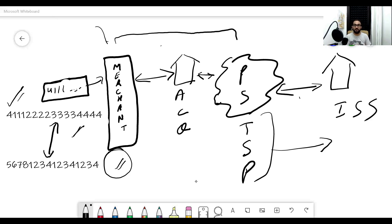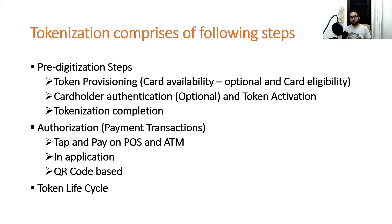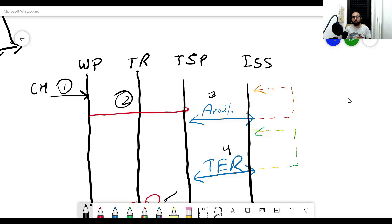By now I hope you understand tokenization at a high level. Let's go a little deeper. Broadly the tokenization process can be divided into three major areas: number one is pre-digitization, number two is authorization and transaction, and number three is token lifecycle management. In today's session we will cover the pre-digitization step in detail; authorization at high level we just covered, and a detailed token-based authorization video will come separately. Pre-digitization itself is divided into three steps: token provisioning, cardholder authentication (second factor authentication), and token activation, followed by tokenization completion.